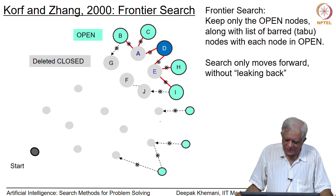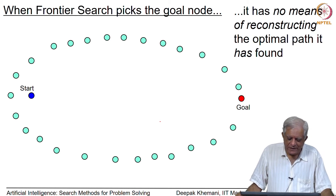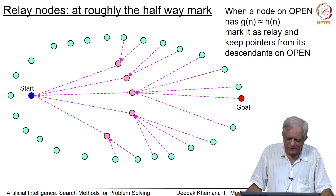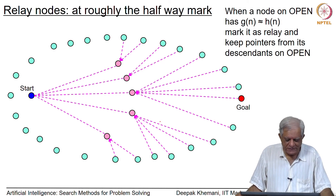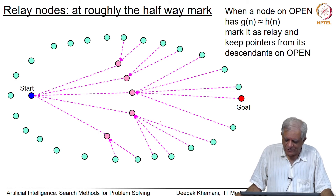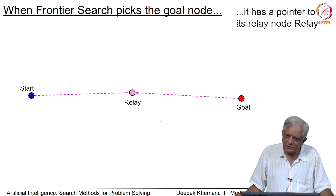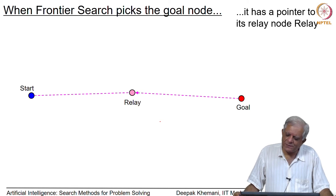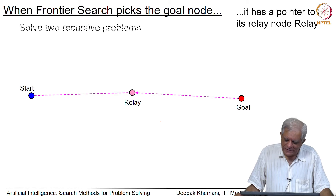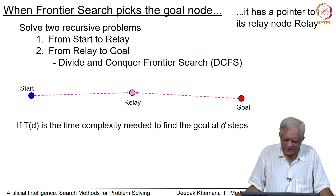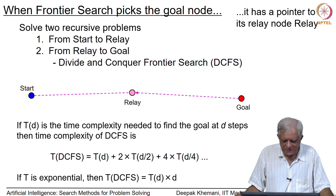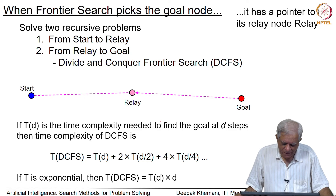The remaining problem was how to find the paths to the goal. The solution offered by divide and conquer frontier search was to maintain a relay layer of nodes at roughly the halfway mark. Once you have found the goal node, you break the problem into two sub-problems and solve them recursively. The advantage is that we need less space — we have already thrown away the closed list, and as we solve smaller and smaller problems we need even less space, albeit with some extra work.